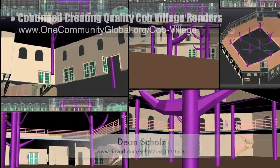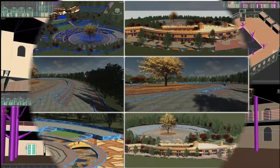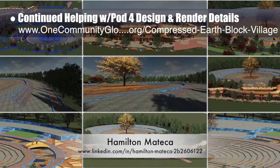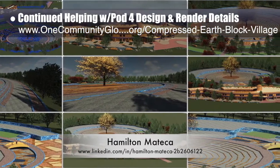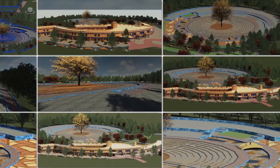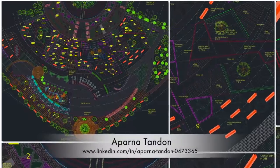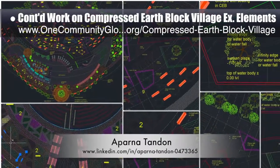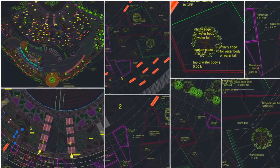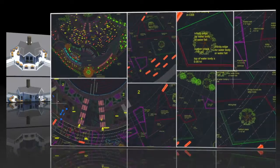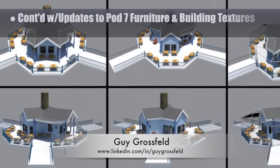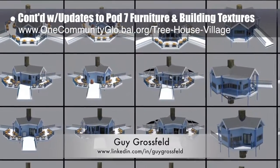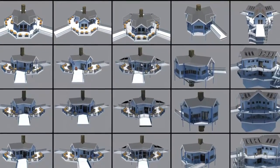Hamilton Matiga, AutoCAD and Revit designer, finished his 45th week helping with the Compressed EarthBlock Village design — this week's focus was adding blue brick details to the labyrinth area and a new round of complete village test renders. Aparna Tandon, architect, continued her 27th week of work on the Compressed EarthBlock Village external elements, focusing on finishing Zone 7 and beginning Zone 8 designs and visualizations. Guy Grosfeld, graphic designer, continued updates to the Treehouse Village pod 7 furniture and building textures — 4th generation renders of the kitchen, bathroom, shower structures, library, playroom, and residential structures.